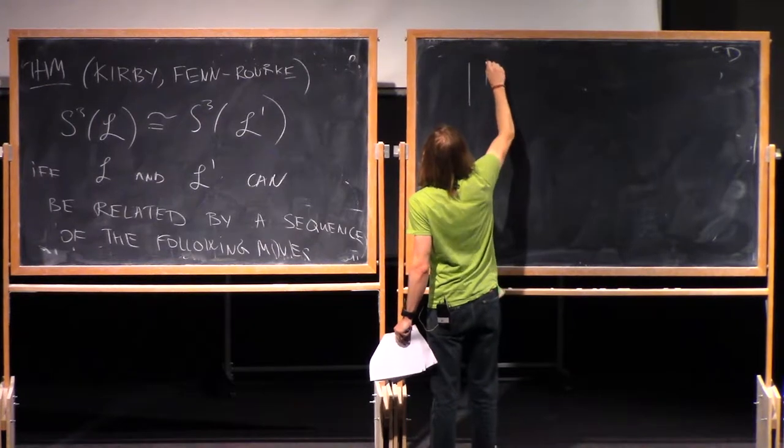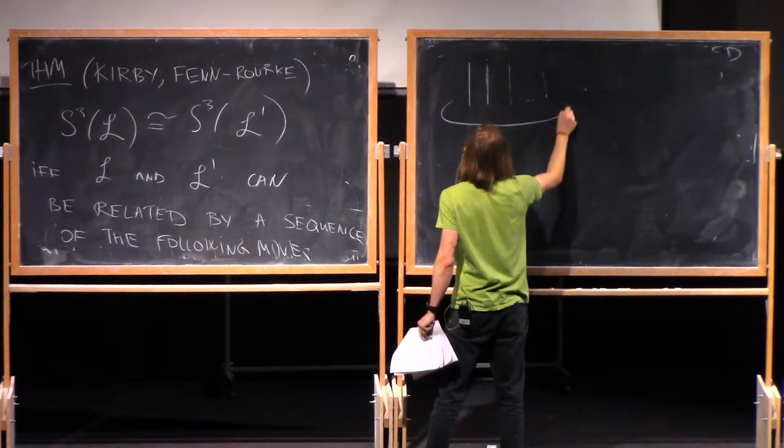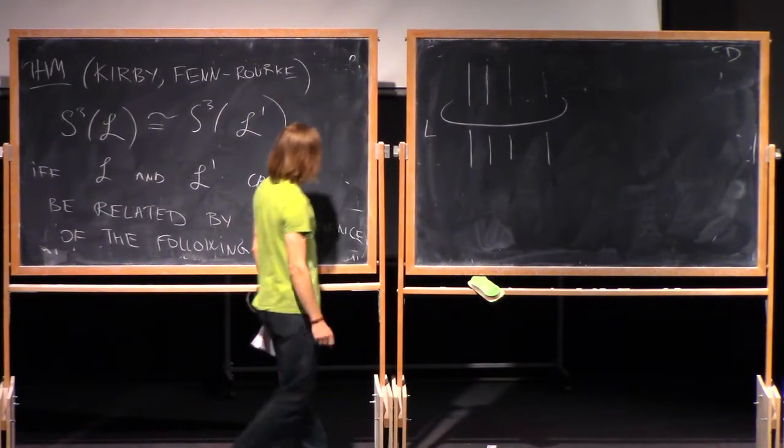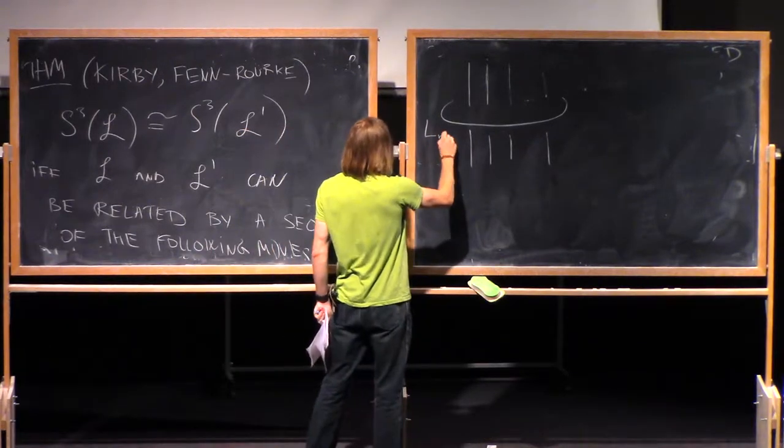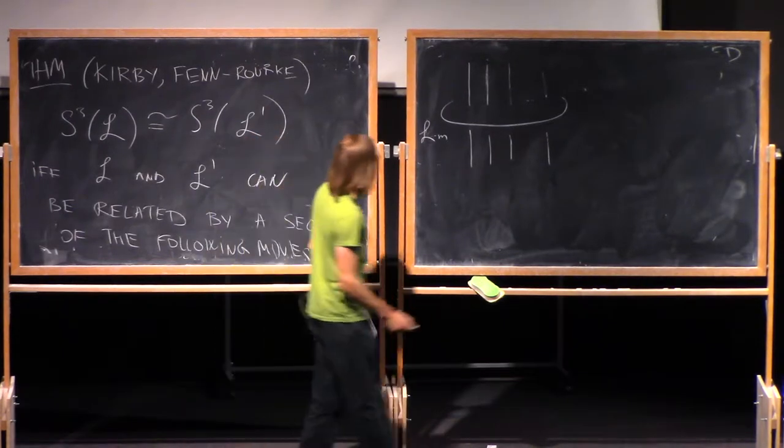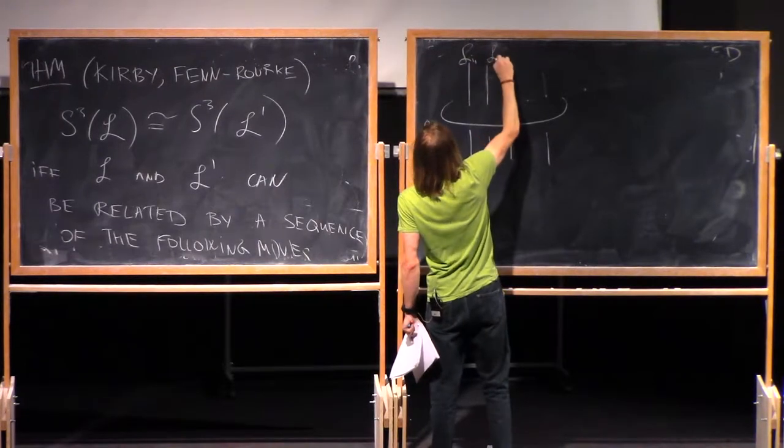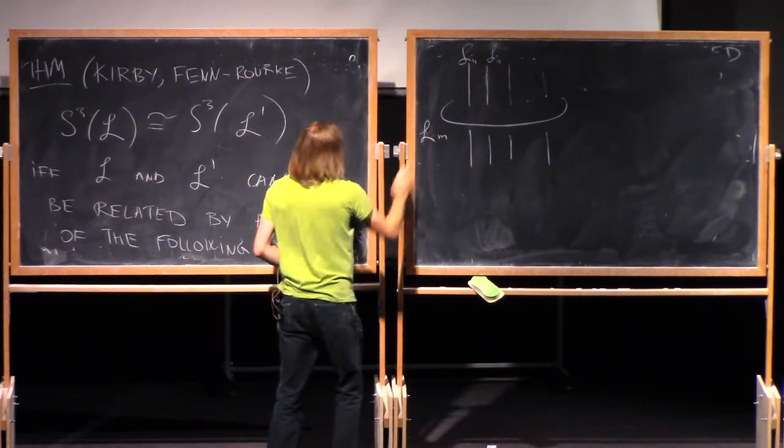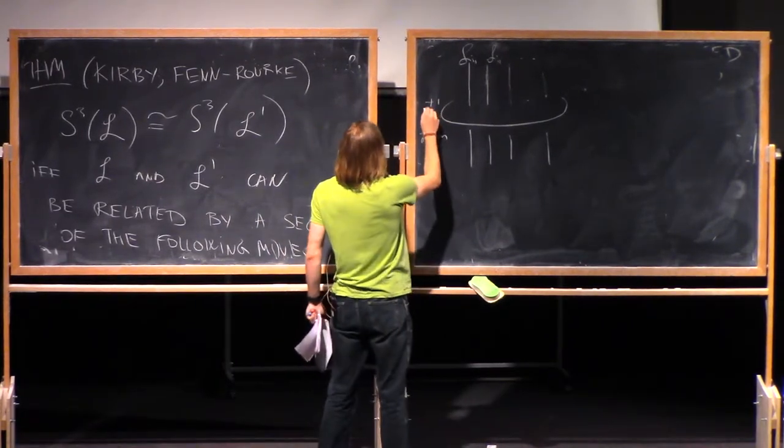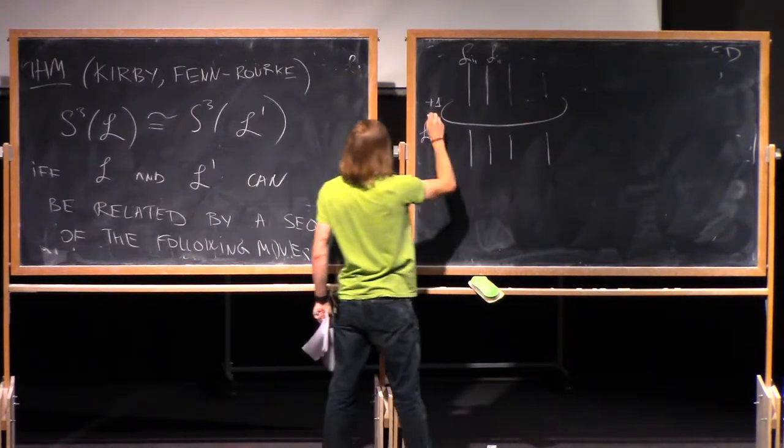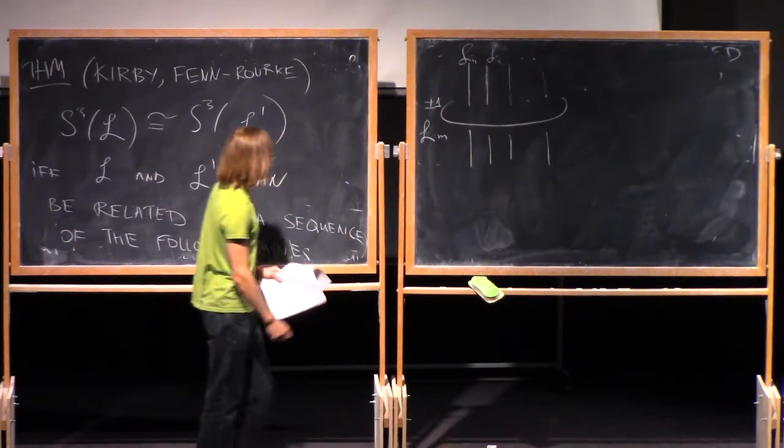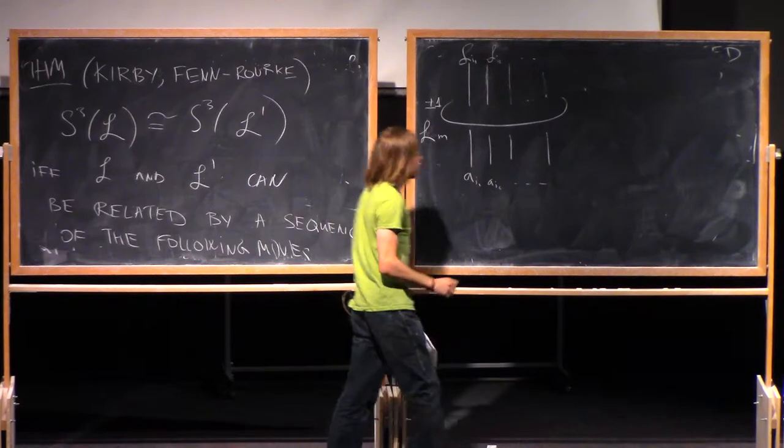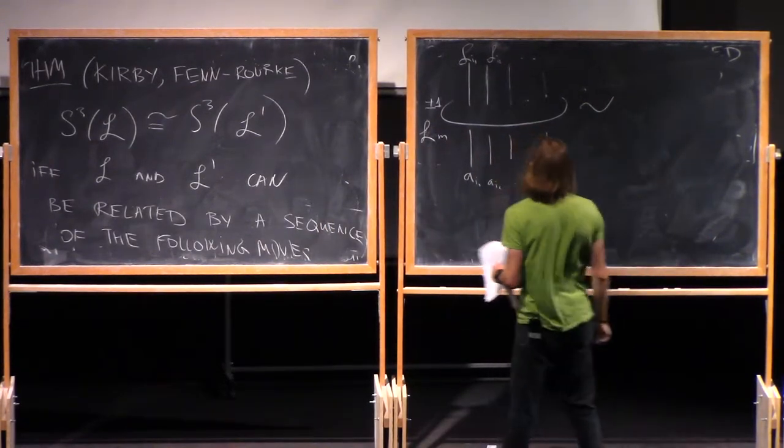Suppose I have a link which locally looks like this. I have a bunch of strands coming through some link component, let's say Lm, and this will be something like Li1, Li2, and so on. Of course, some of them may coincide because the link can go a few times.